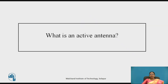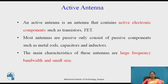Let us see what is an active antenna. As you may know the definition of active, an active antenna is an antenna that contains active electronic components such as transistors, FETs, and so on. So it should have active electronic components.